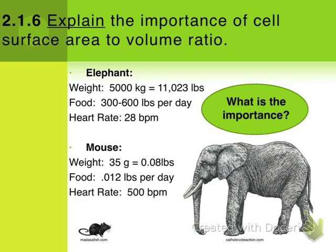A really clear example of this is when we compare an elephant to a mouse. Elephants are huge — on average about 11,000 pounds. They require 300 to 600 pounds of food per day, but they have a very low heart rate of only 28 beats per minute. This tells us that for their size, elephants have quite a slow metabolism, and therefore less heat production.